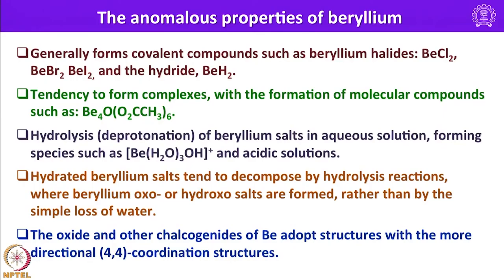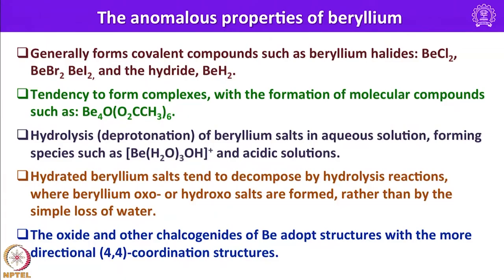Before discussing the chemical reactivity of alkaline earth metals, let us examine the anomalous properties of beryllium. Beryllium generally forms covalent compounds such as beryllium halides (BeCl2, BeBr2, BeI2) and covalent hydride BeH2. Due to its large hydration enthalpy, it tends to form molecular complexes such as beryllium acetate. Hydrolysis of beryllium salts in aqueous solution forms species such as [Be(H2O)3(OH)]+ in acidic solutions, and hydrated beryllium salts decompose by hydrolysis rather than simple loss of water.